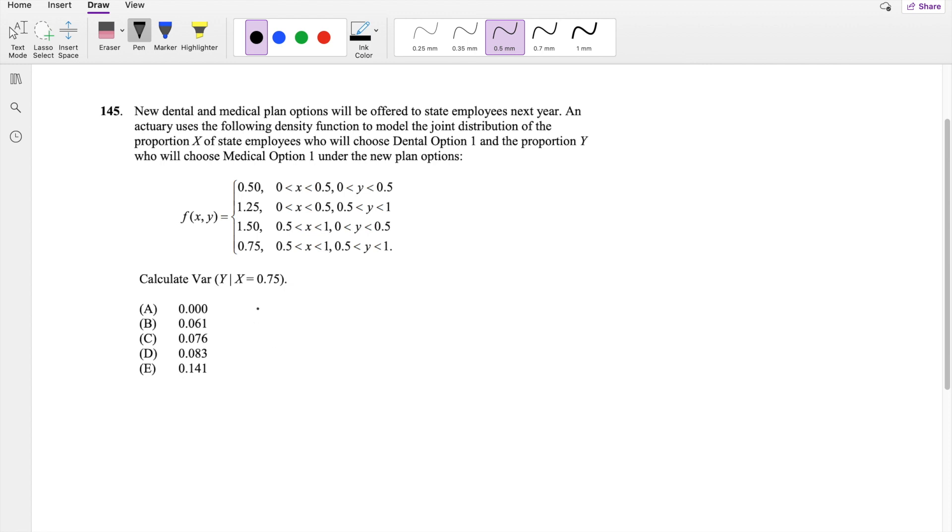So this basically asks for the variance of y given x is equal to 0.75, so we have to use our conditional probability for joint distribution formula. So that basically says the probability of y given x is equal to the f of xy divided by the marginal distribution of x.